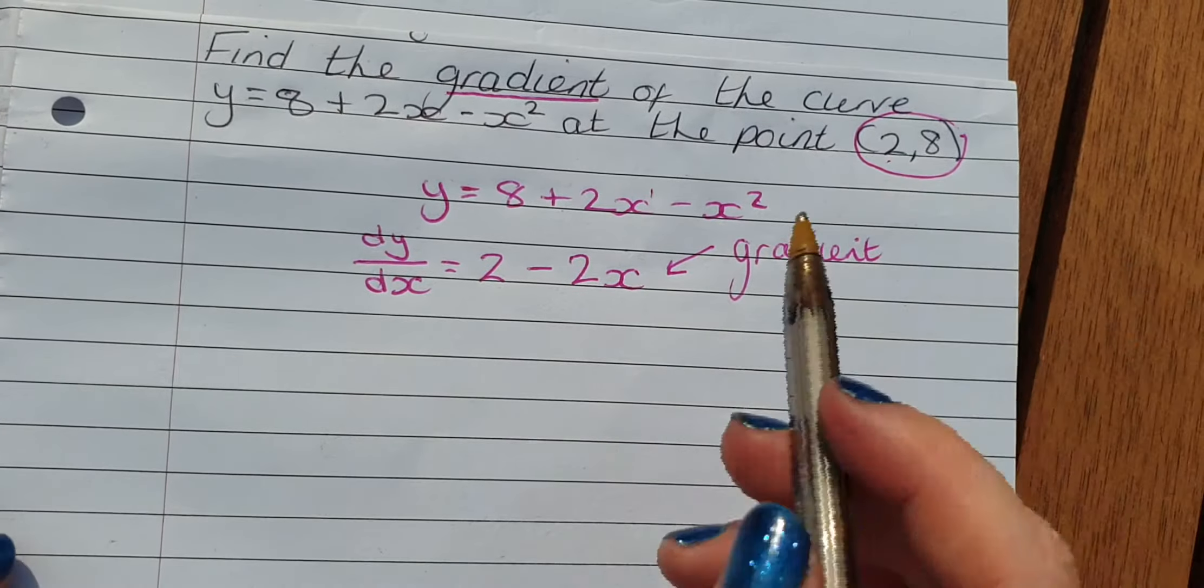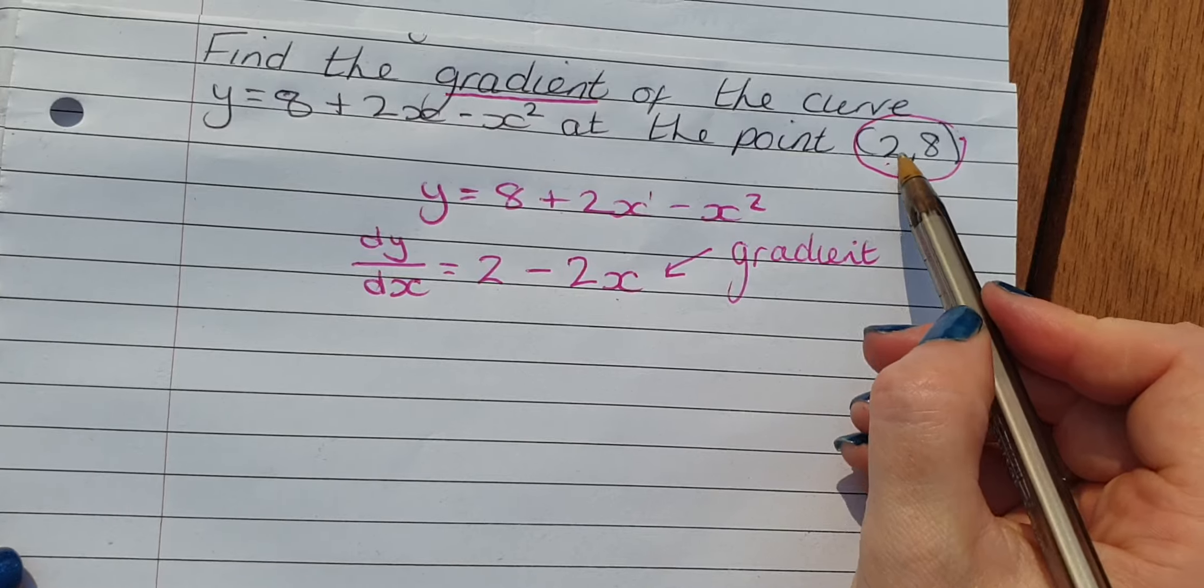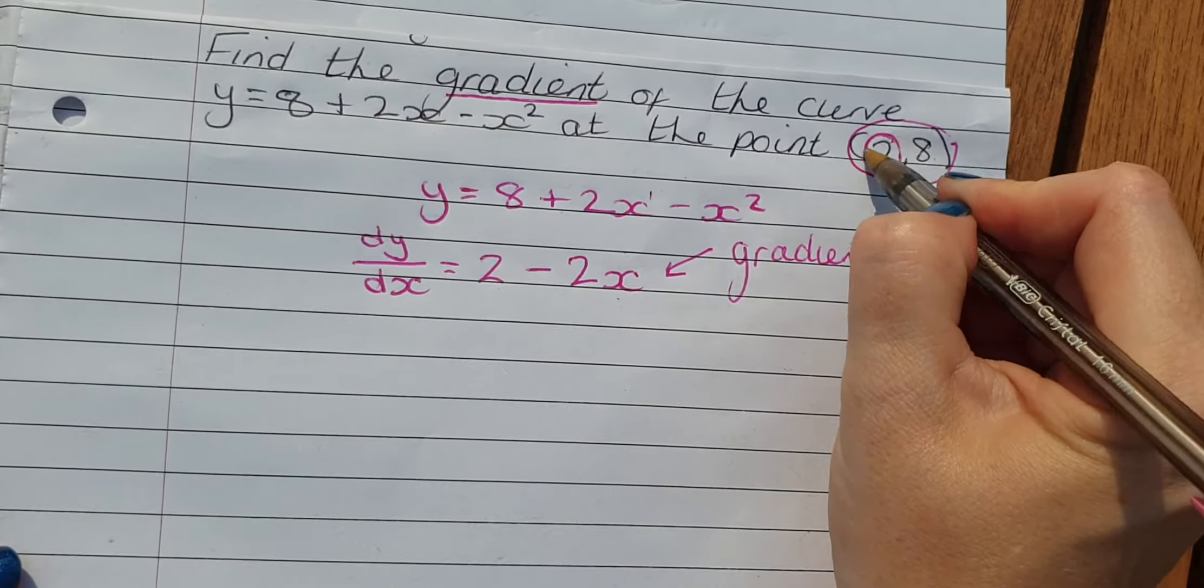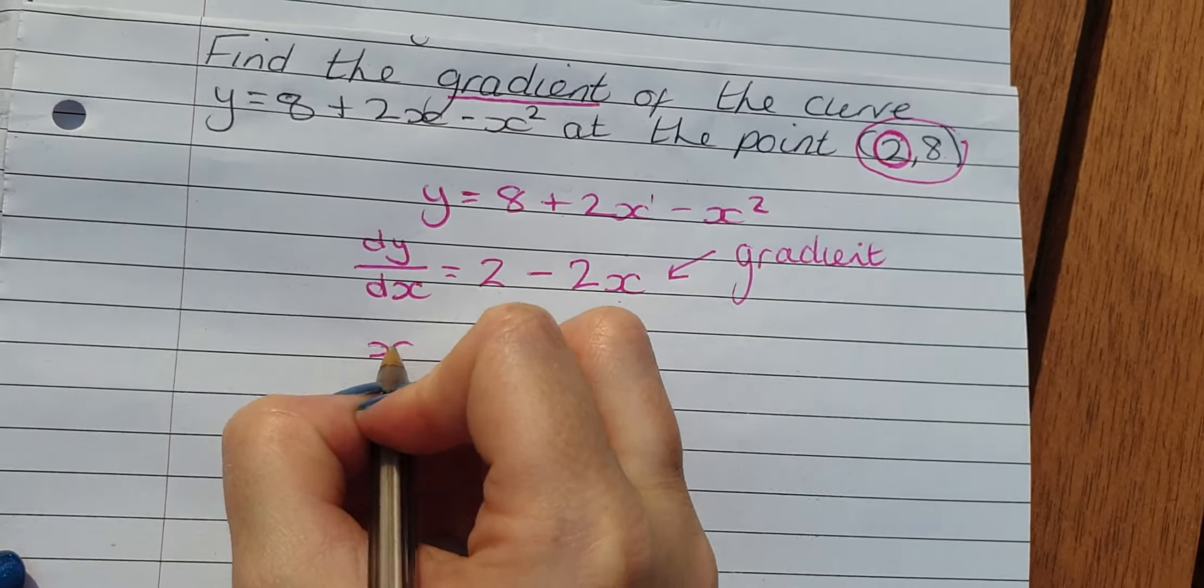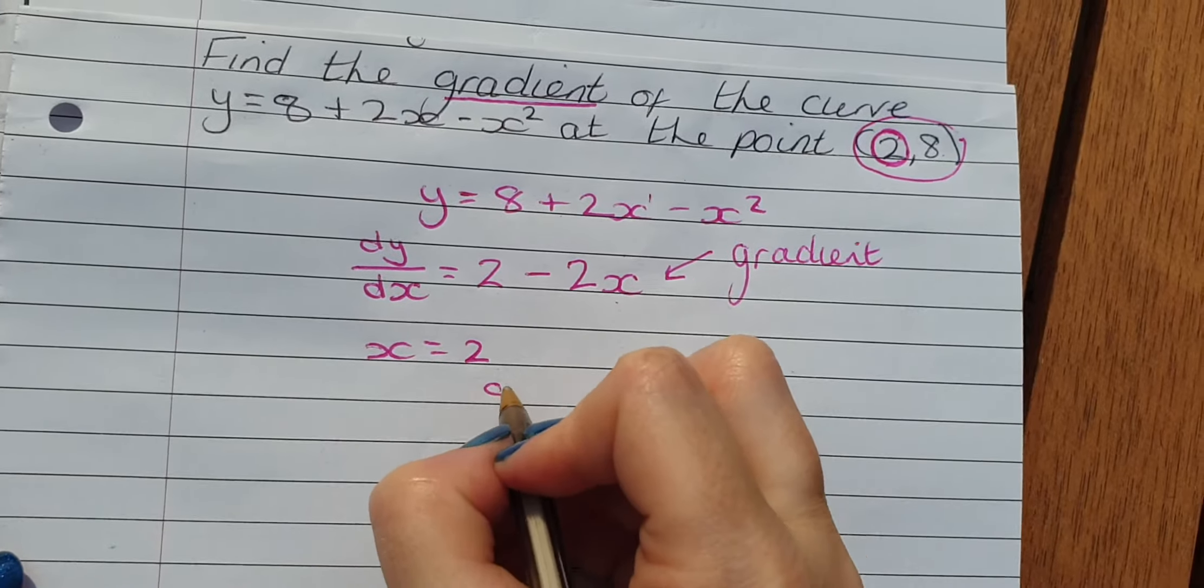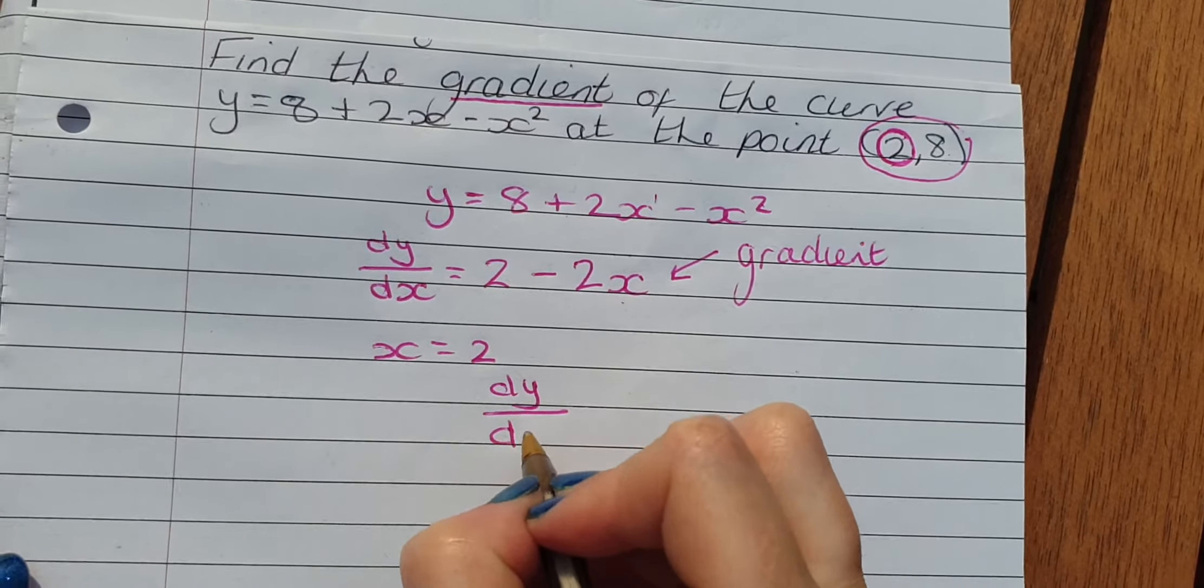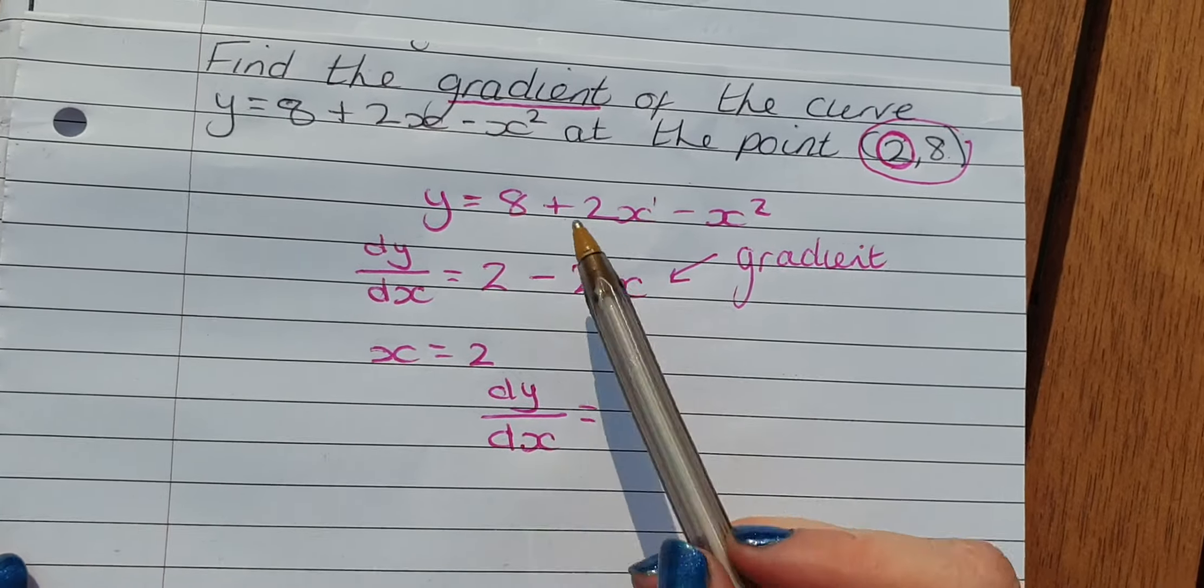This has got an x in it, so I need to sub in my x coordinate, which is 2. So if x equals 2, and I sub that in to my differentiated curve.